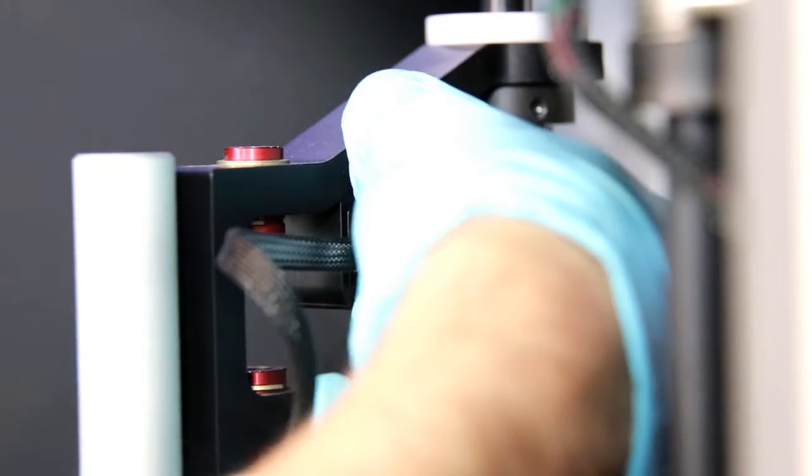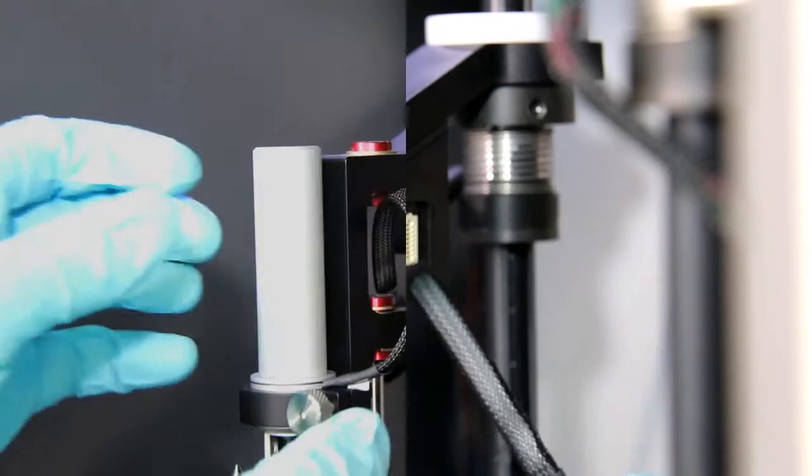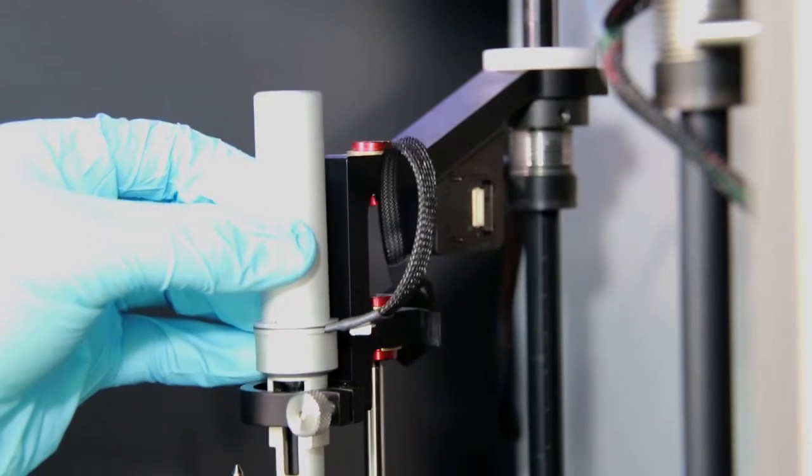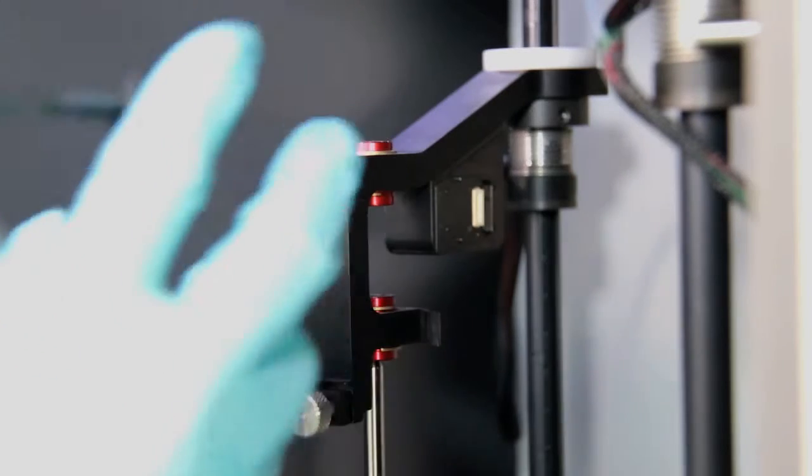Remove the cable from the arm. Next, we loosen the collar holding the pipette to the arm and simply slide the pipette out.